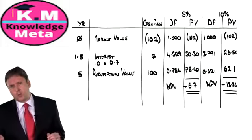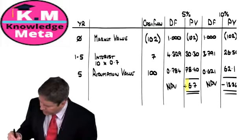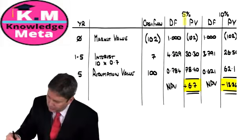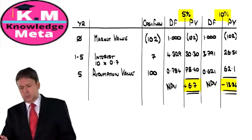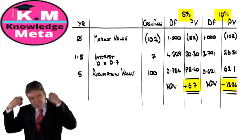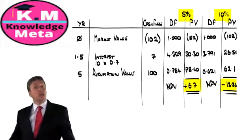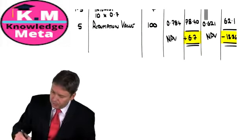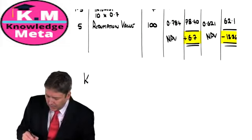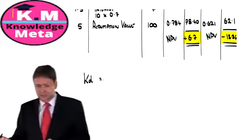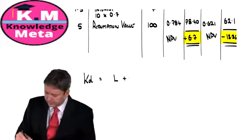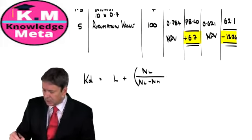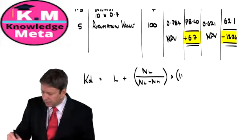We have a positive and a negative value, and of course we already know the discount rates. With those four pieces of information we can throw this into the IRR formula. When we calculate the IRR — which gives us KD — we use: L + [NL / (NL − NH)] × (H − L).